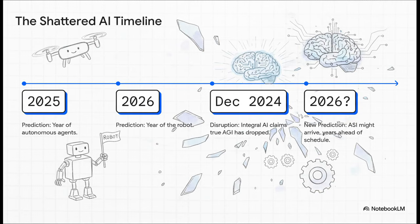The old timeline was 2025, we get autonomous agents. 2026, the year of the robot. And then maybe, just maybe, we'd see artificial superintelligence or ASI by 2027. But if embodied AGI is here now, at the end of 2024, that shatters everything. That could mean we hit ASI as early as 2026. We are so far ahead of schedule, it's not even funny.